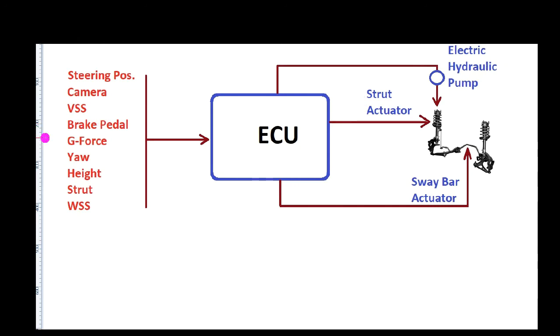Here's some of the sensors that are used. The ECU is going to control actuators on the outputs to control the dampening of the struts and the control of the body movement. We have inputs, the ECU controls the outputs to control body movement.